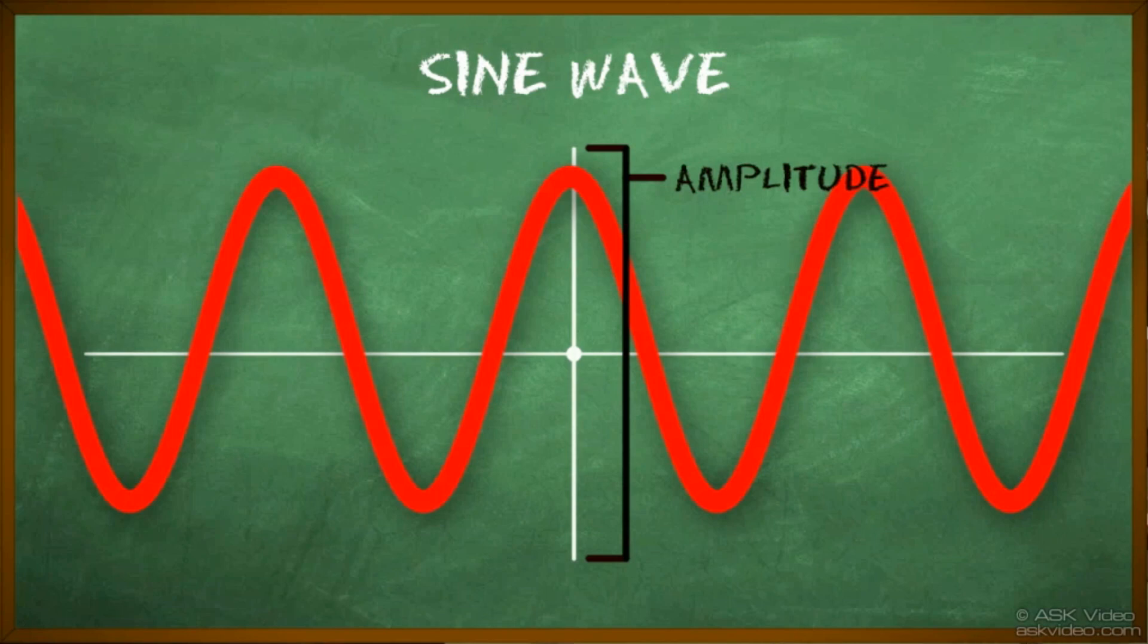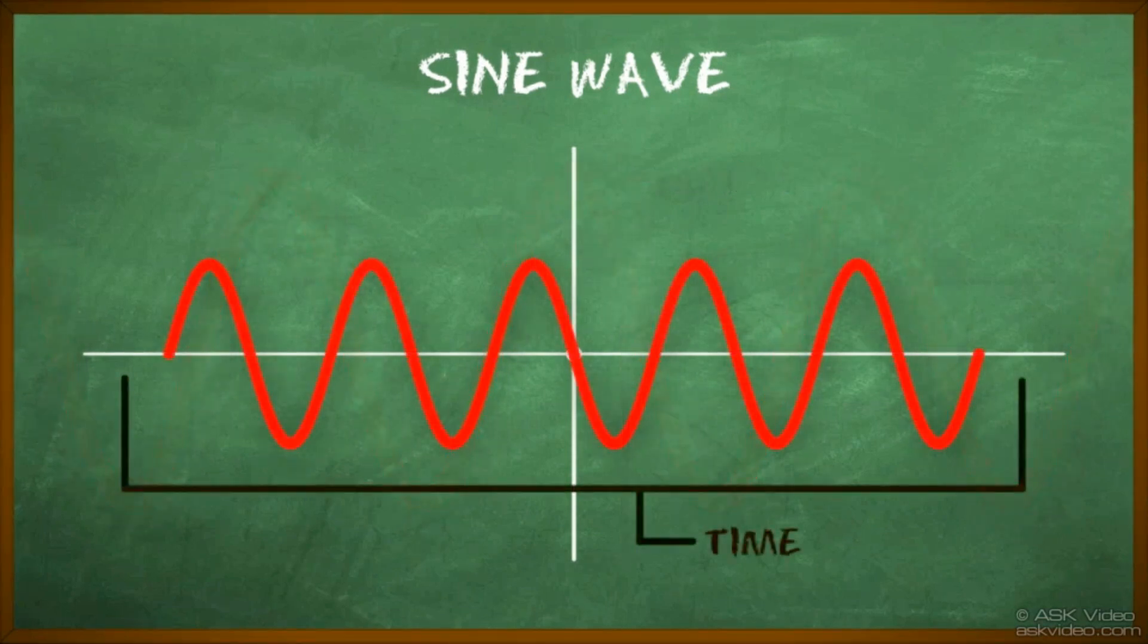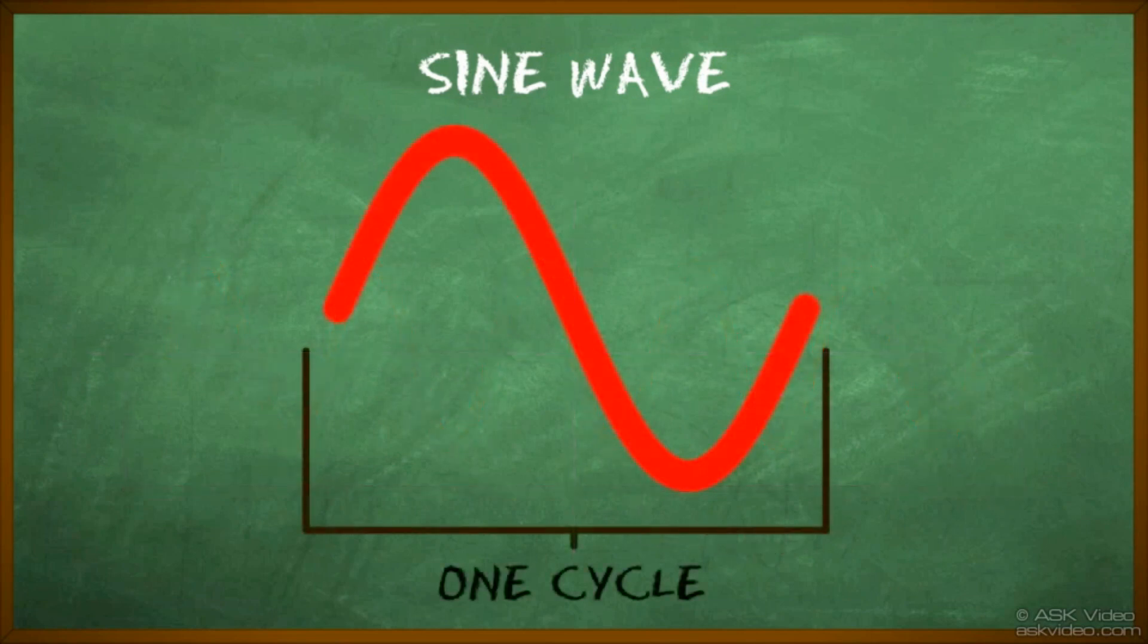The horizontal axis represents time. One cycle of the wave is equal to one positive and negative motion. Counting how many of these cycles happen per second gives us the frequency of the wave.